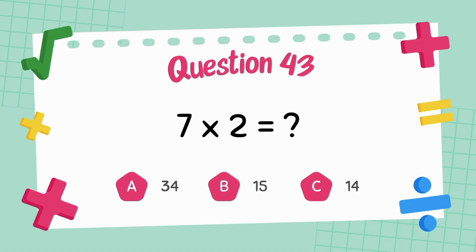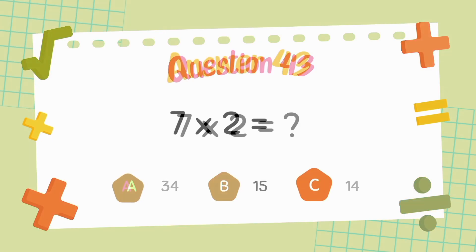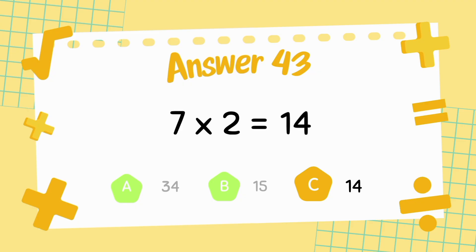What is seven multiply two? The answer is fourteen.